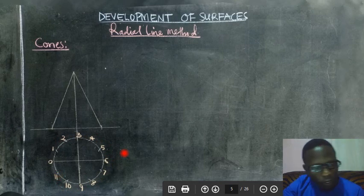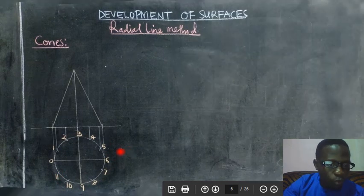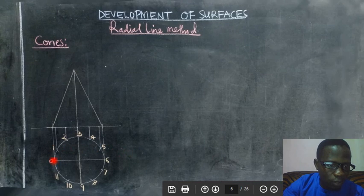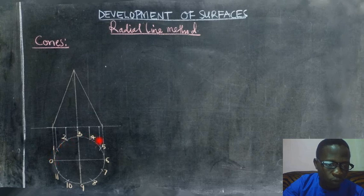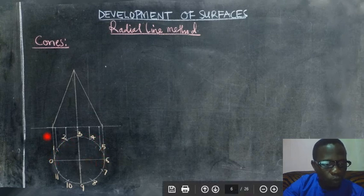Now what we do we project lines from the points on the circle like as you can see we have lines through 0, 1, 2, 3, 4, 5 like that to the base of the cone.